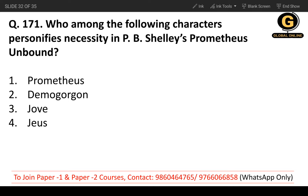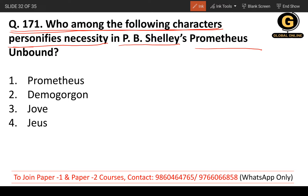Question 170: Who among the following characters personifies necessity in P.B. Shelley's Prometheus Unbound? The options are Prometheus, Demogorgon, Jove, or Jupiter. The correct answer is Demogorgon — the second option — who personifies necessity.